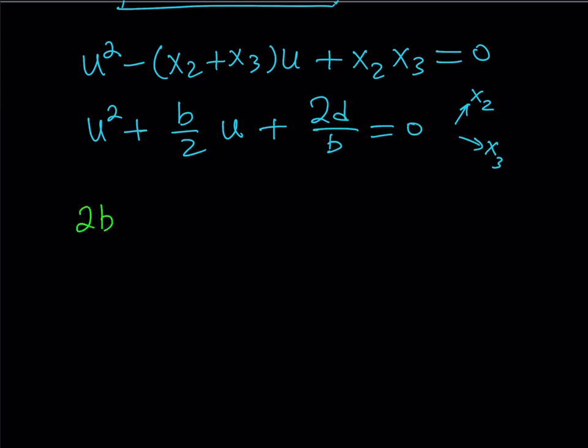So, let's multiply both sides by 2b, and it's going to give me 2bu squared plus, so when I multiply 2b, 2 is going to cancel out. So, that's going to give me b squared u, and the b is going to cancel out. I'm going to get 4d from here. Okay, so this is a quadratic in u, and we can solve it using the quadratic formula.